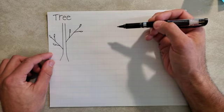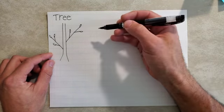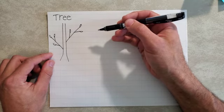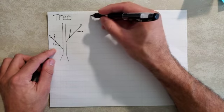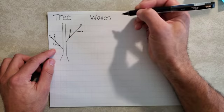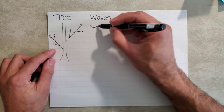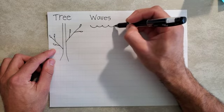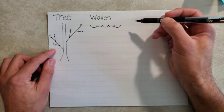Another way that you can use lines, shapes, and patterns is by drawing waves. The way you draw waves is like this. Three, four, five. I just drew five waves.